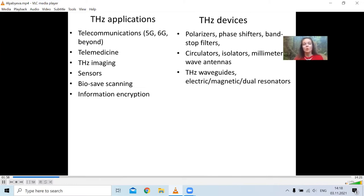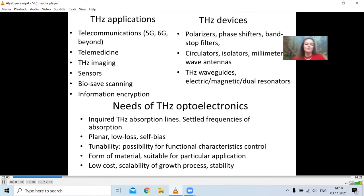But if you move one step even more deeper, all the devices are based on materials. So the main needs of terahertz optoelectronics, the main requirements for the materials are the presence of absorption lines of needed frequency and needed width.